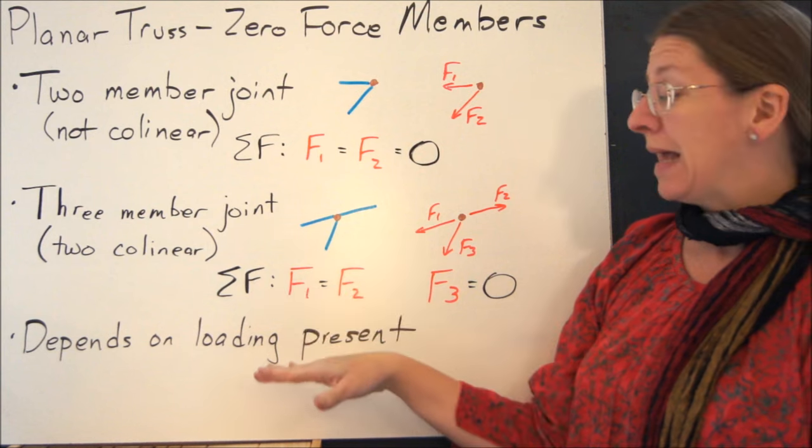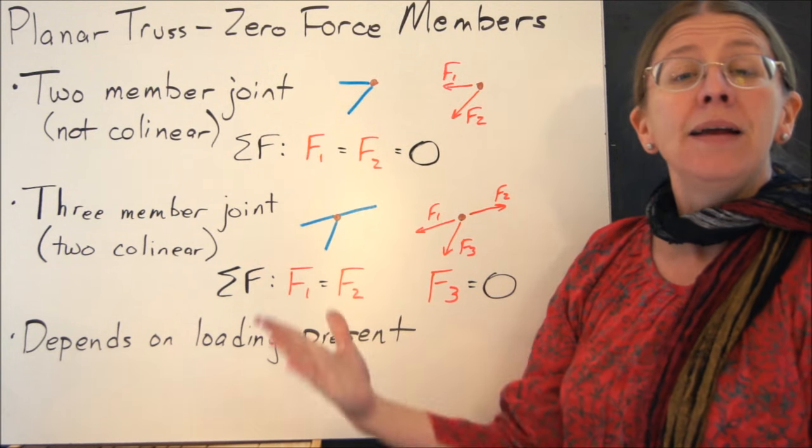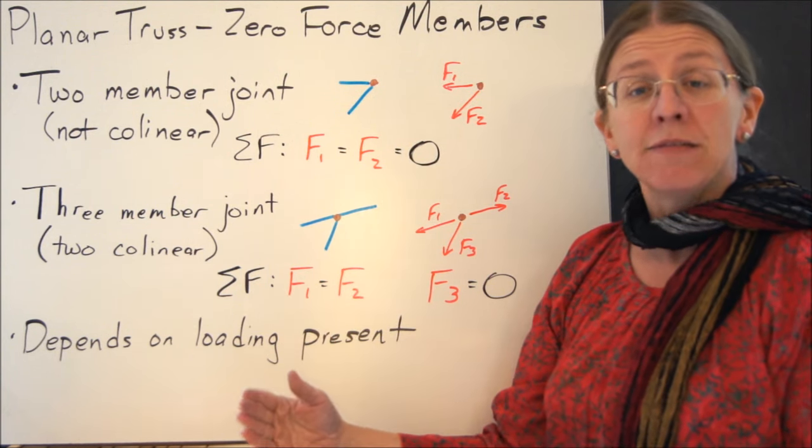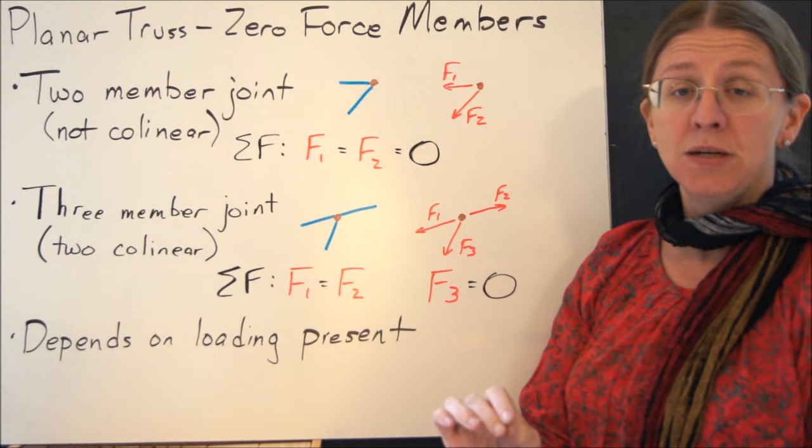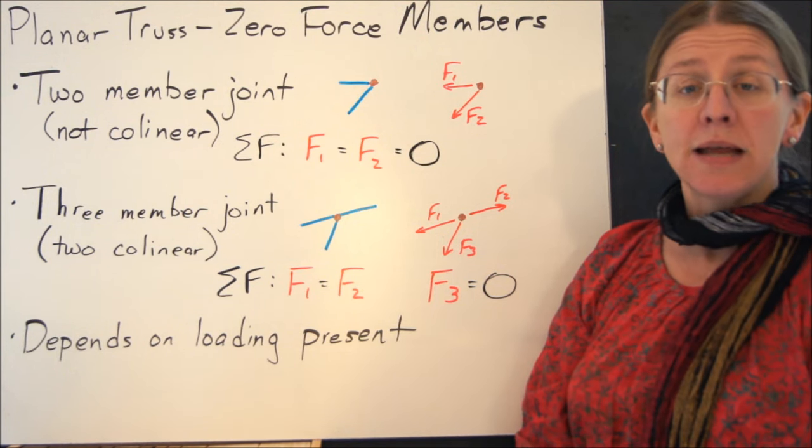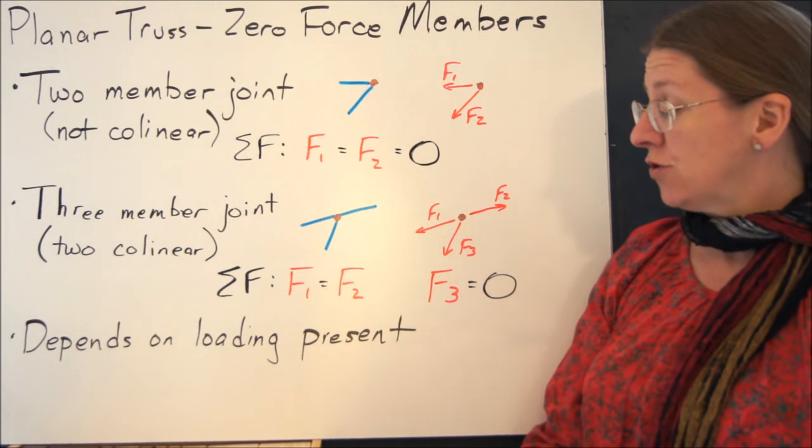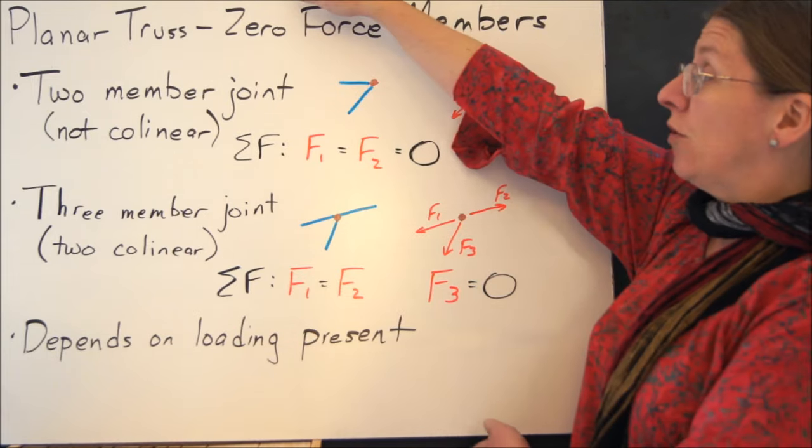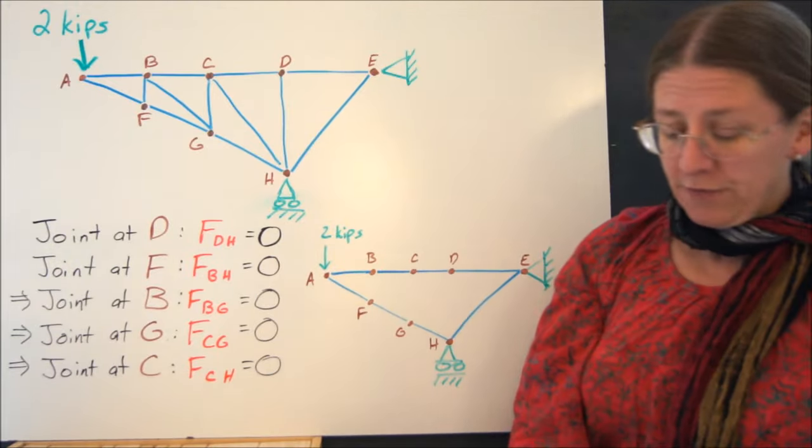So these two situations allow you to say, I know automatically that that member has to be zero. And this can make your analysis a lot easier when you've got a whole lot of members in your truss. But it does depend on your loading that you've got here, and it's iterative.